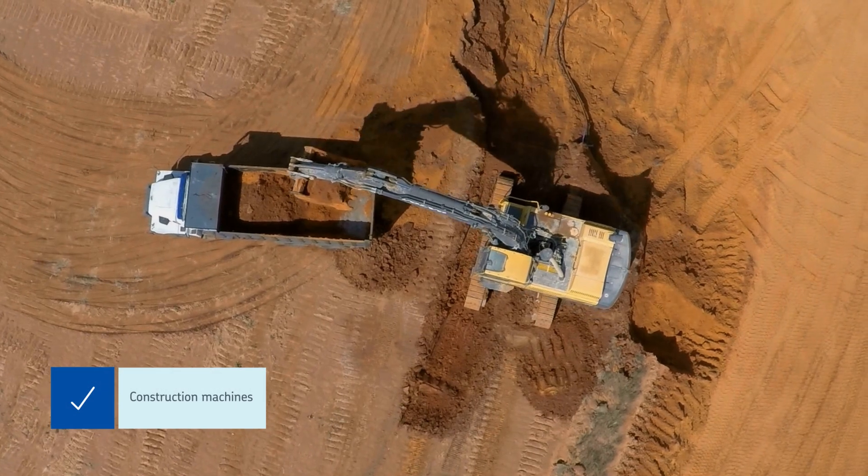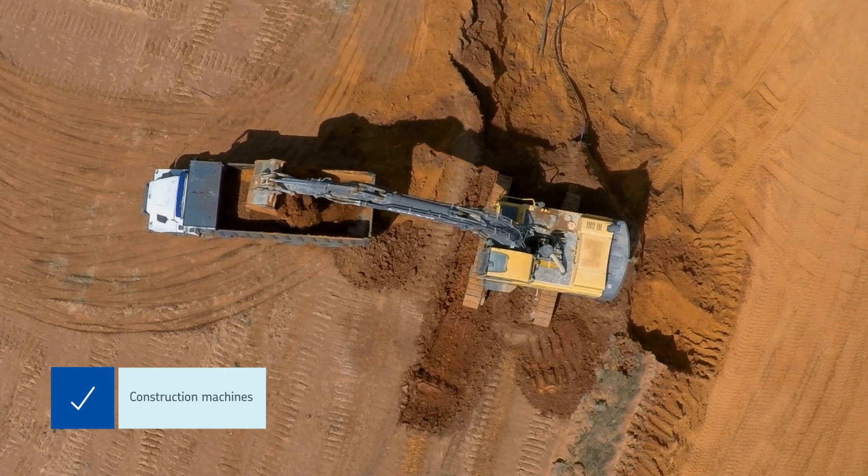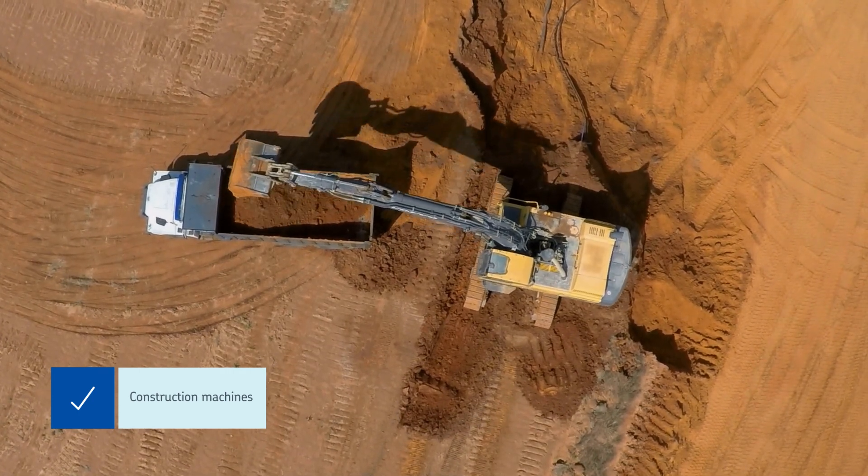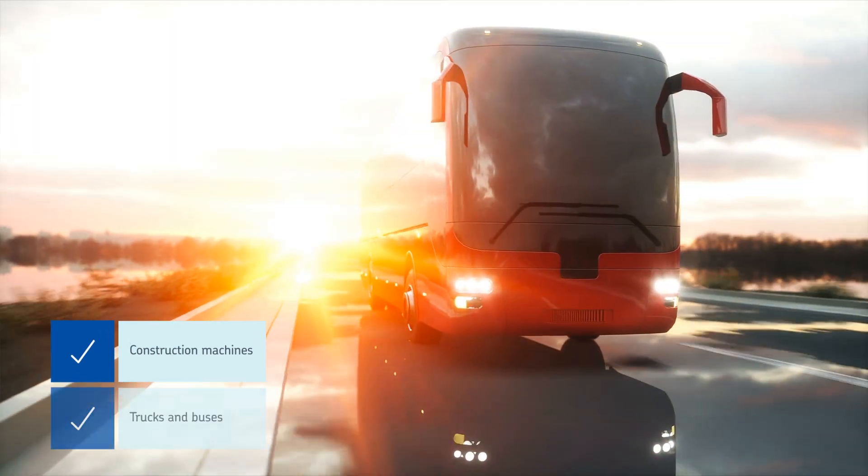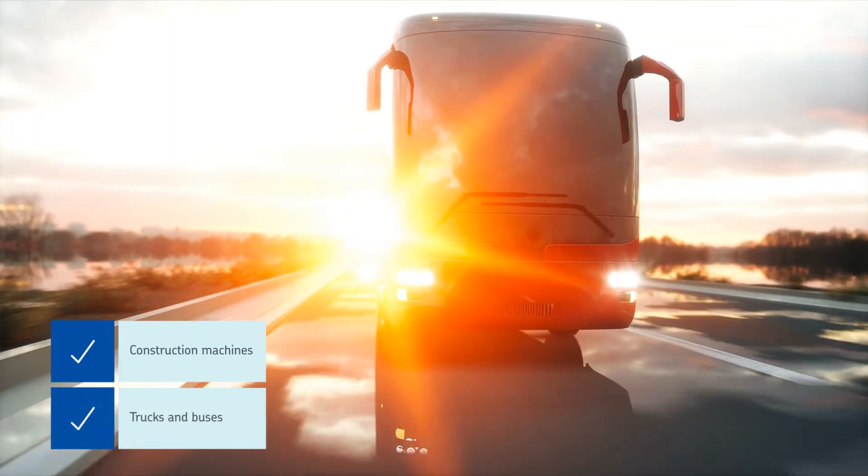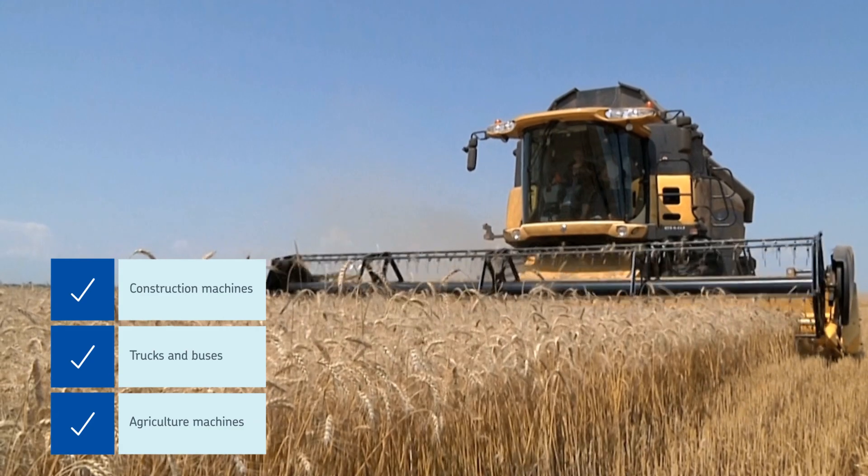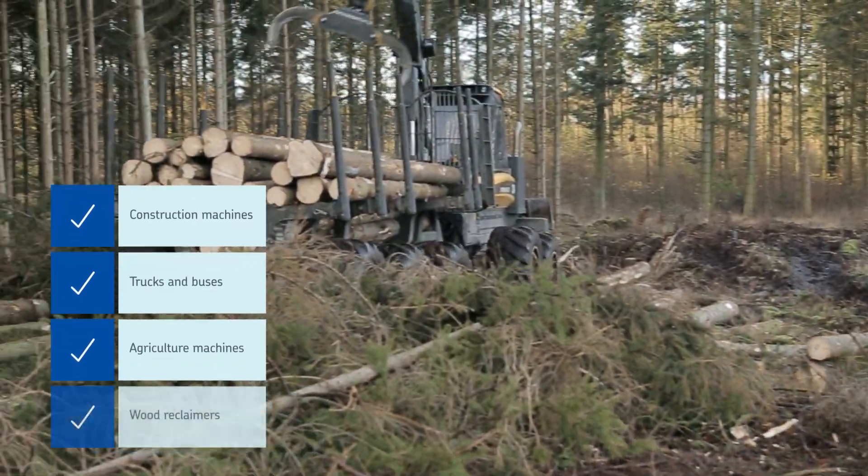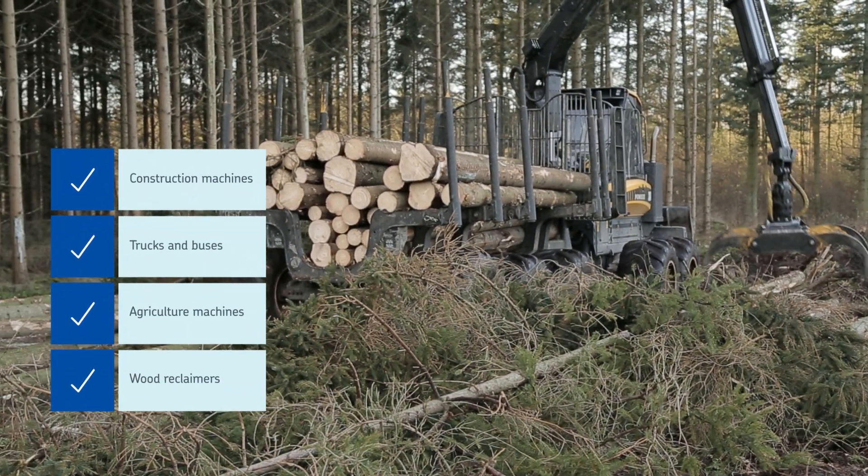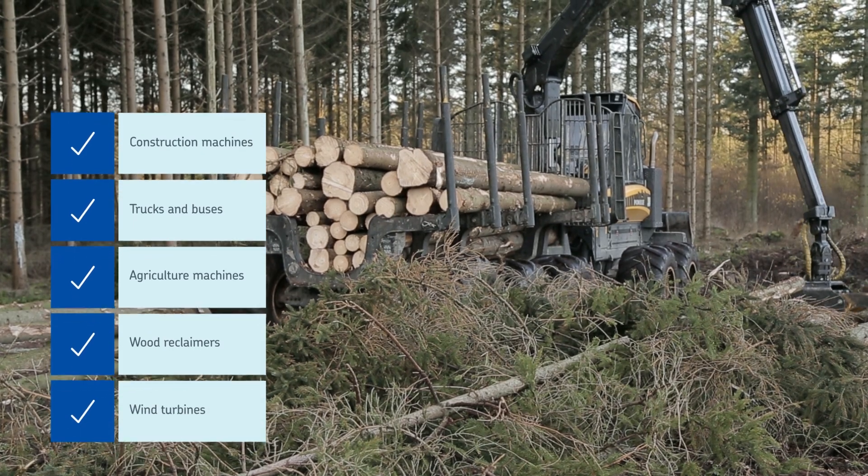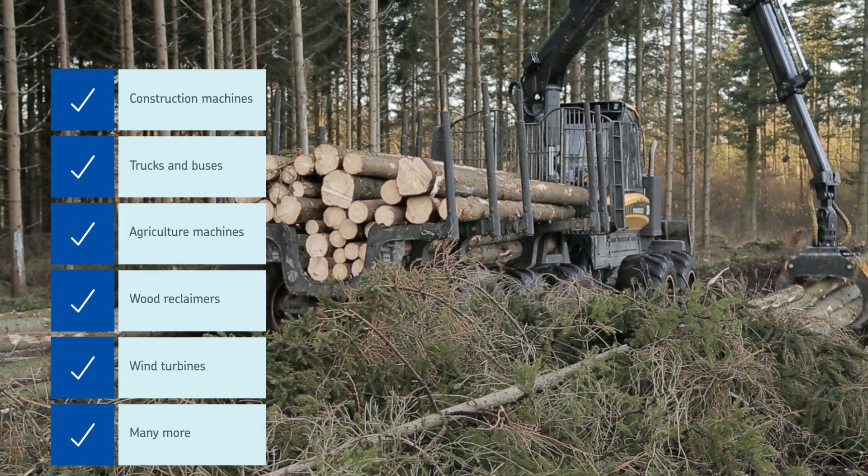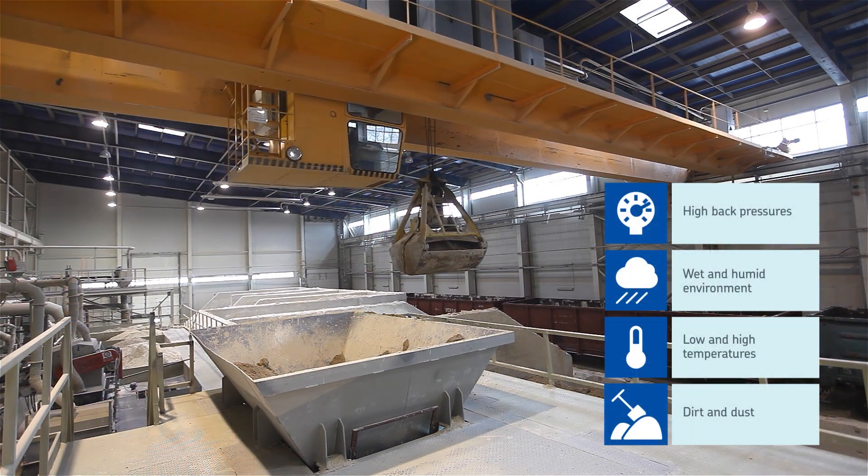SKF progressive automatic lubrication systems are suitable for a variety of applications including construction machines, on-road trucks and buses, agricultural machines, wood reclaimers, material handling equipment, wind turbine generators, food and beverage facilities, and many more.